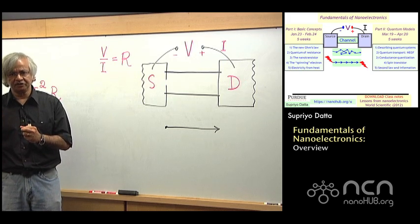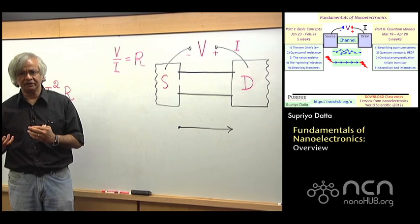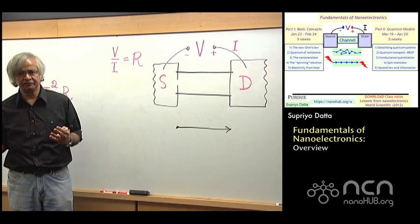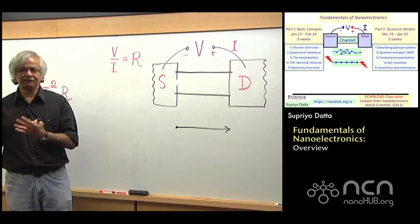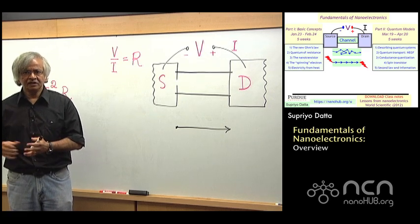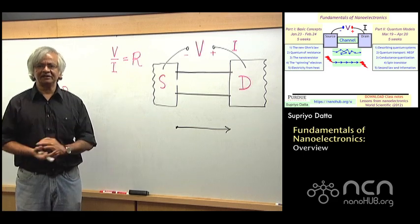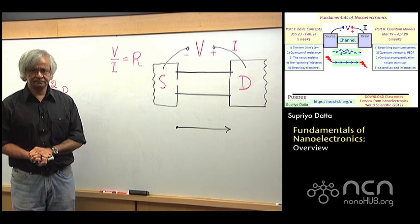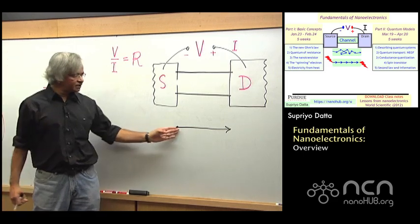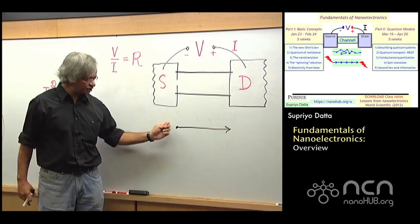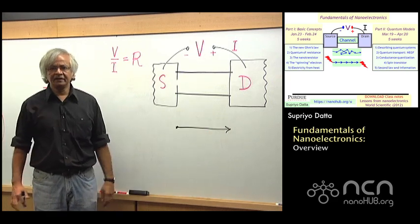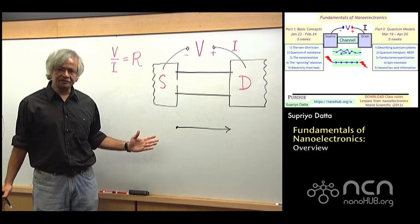The point that bothers people is the following: if an electron is going straight from one contact to the other, then it's not exchanging energy with anything. So it's not giving up any heat in the sense that in a long device what would happen is it would interact with its surroundings. As it goes along, the atoms would start jiggling, it would take some energy away from the electrons and that's how the heat would be generated. And that is what would be reflected as a resistance.